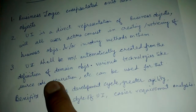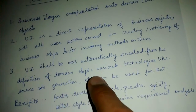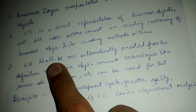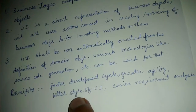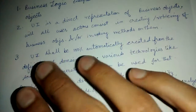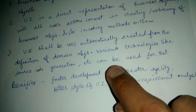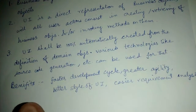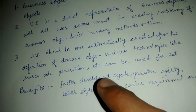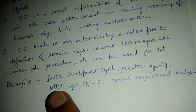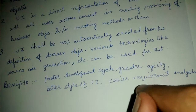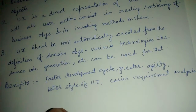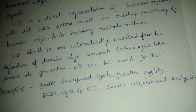Once we have the definition of the domain objects in hand, we can automate the process of UI creation — no coders needed to manually code the UI. We can use various technologies like source code generation for this. Benefits of this design pattern include a faster development cycle, greater agility, better style of UI, and easier requirement analysis.